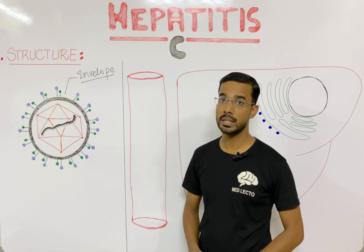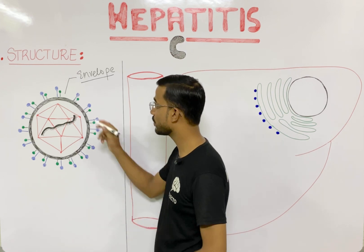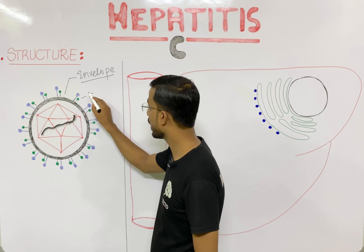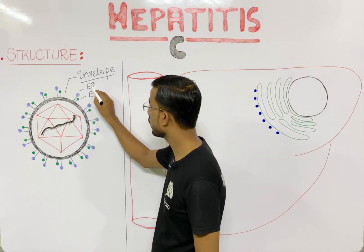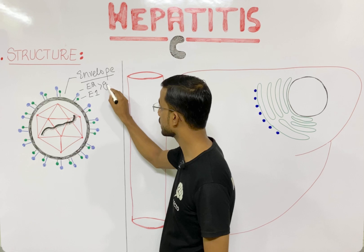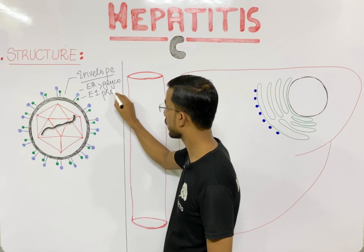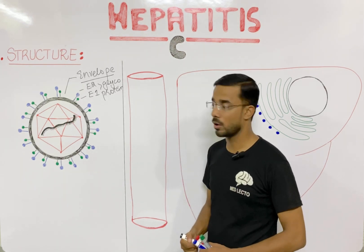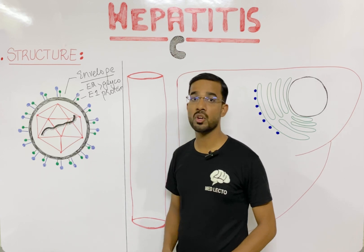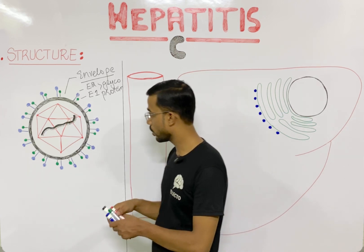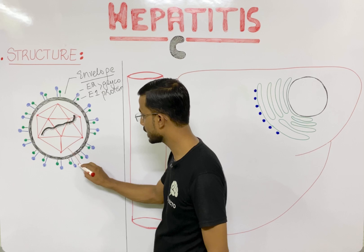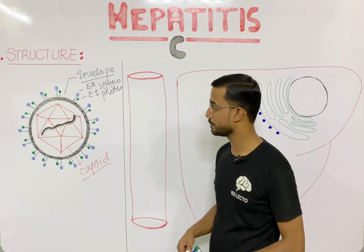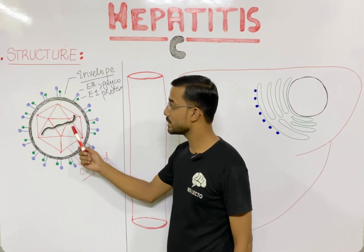In the envelope you will see the two most important glycoproteins — E1 and E2 glycoproteins — which are submerged in the envelope. Inside the envelope you will see the presence of the capsid, which is made up of protein. The capsid is icosahedral in shape.